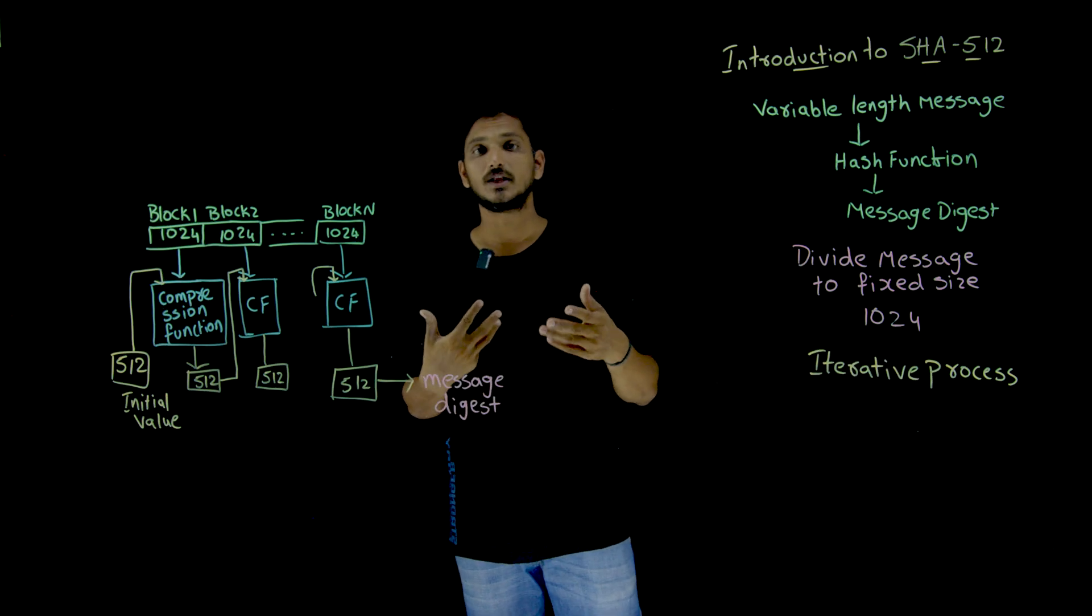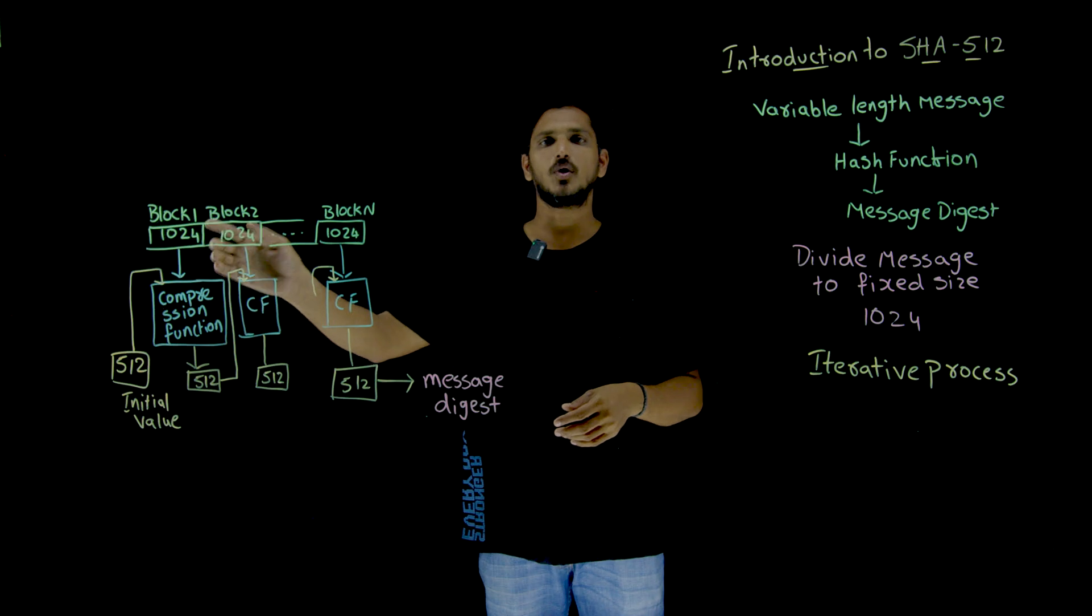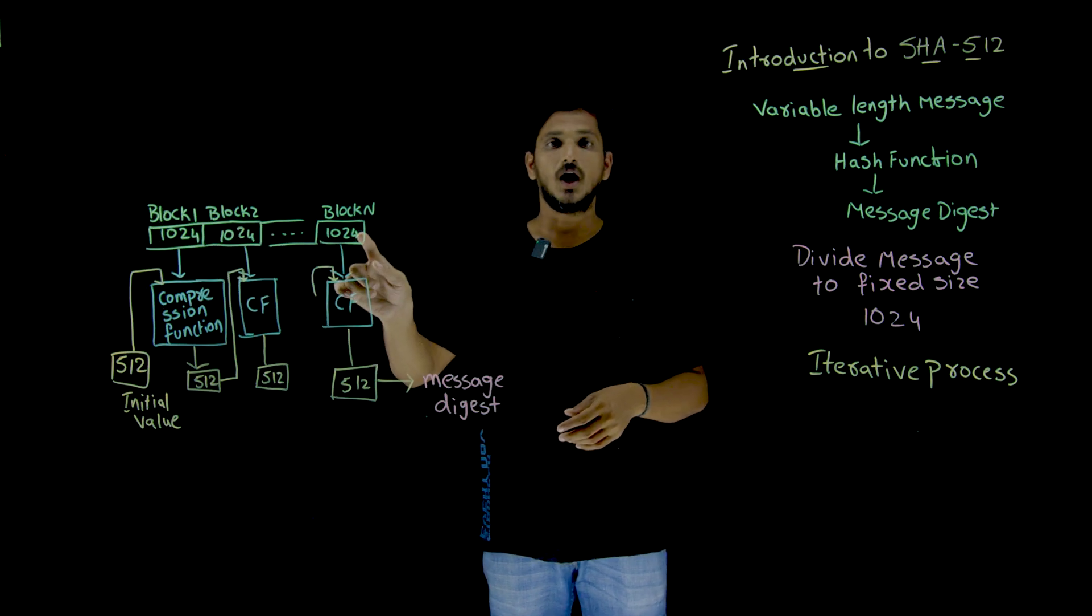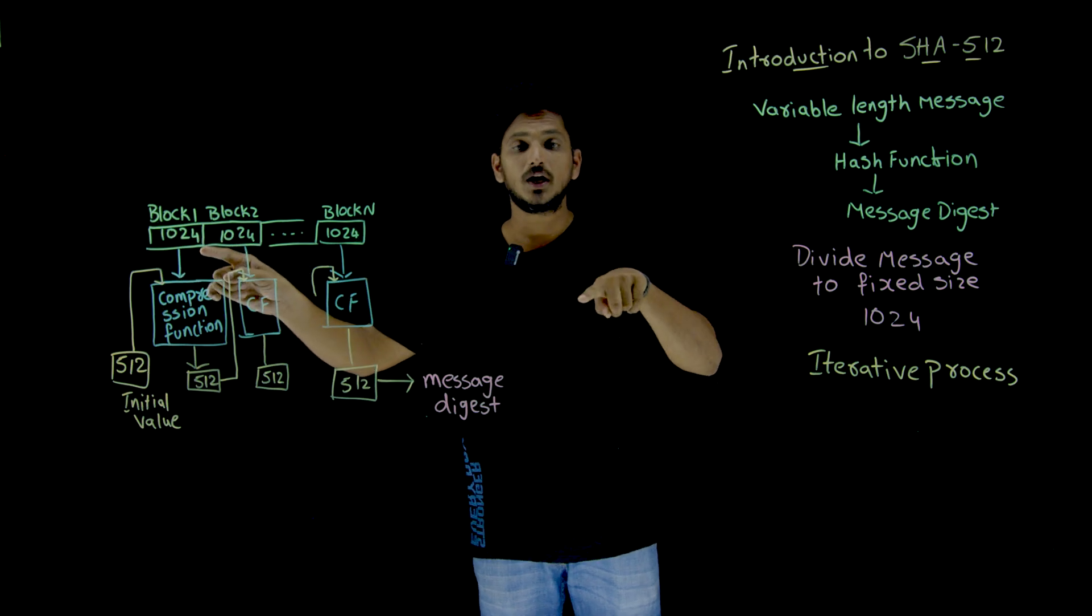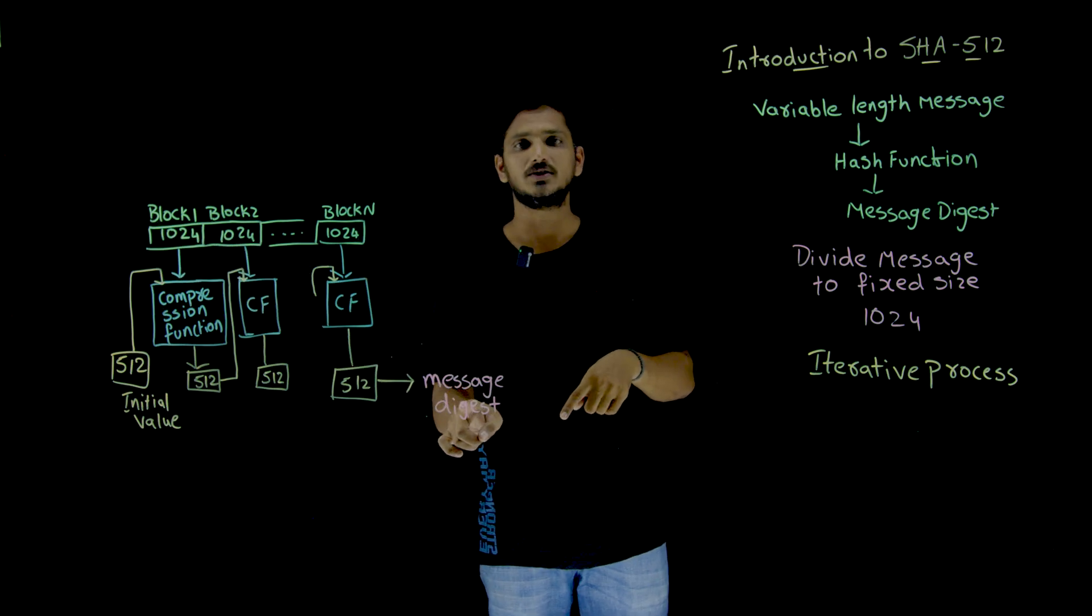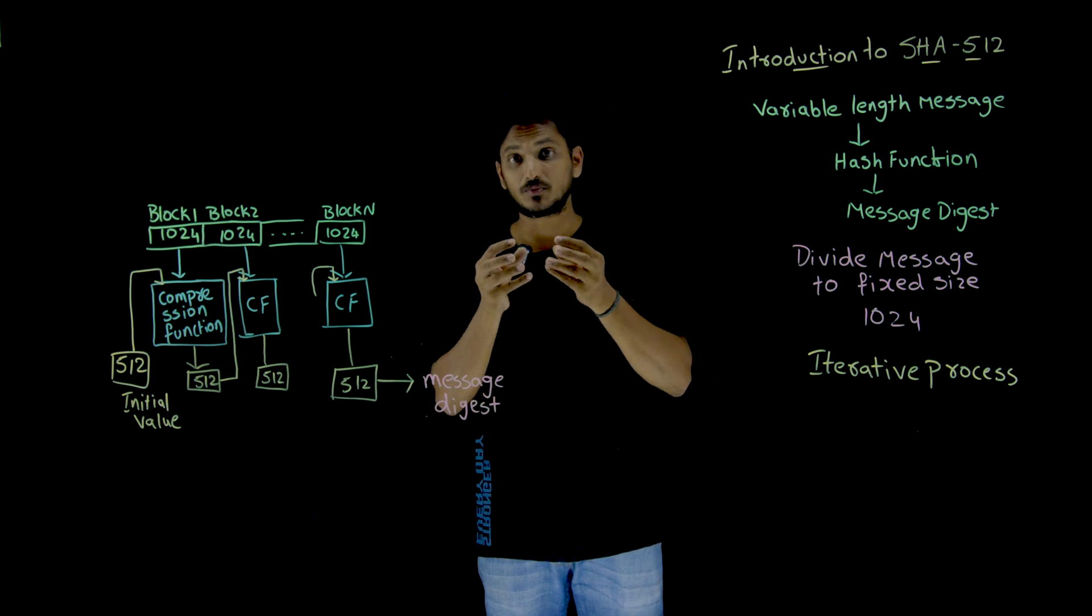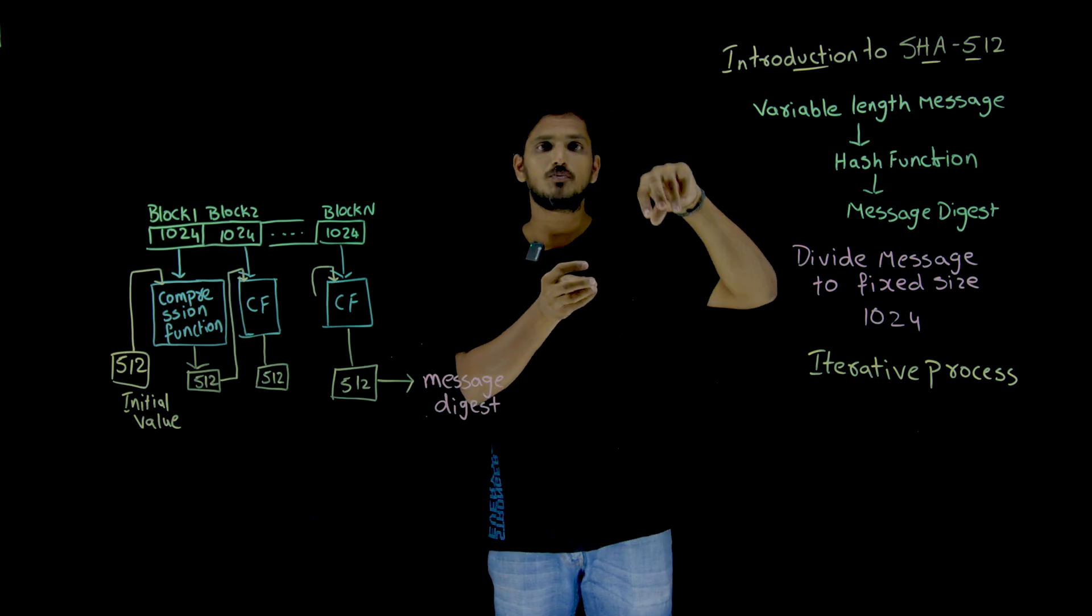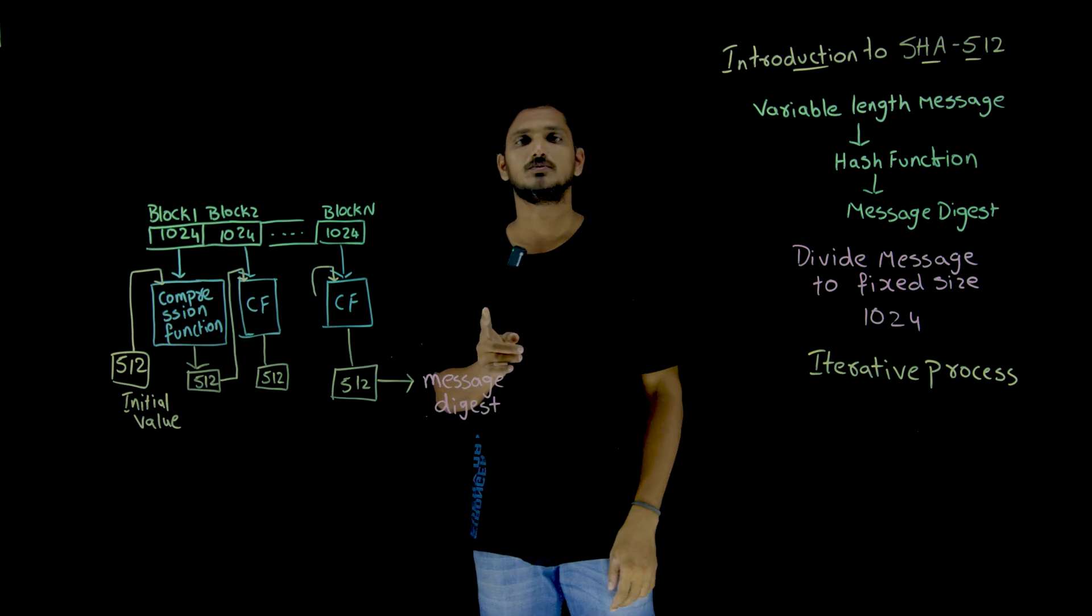Now let's try to understand what iterative process means. Our entire message is divided into blocks of size 1024. And this entire message should be involved in providing the message digest. So that's why we take the first block, and the first block output should be involved with the second block, and the second block output will be involved in the third block. That is what iterative process means.